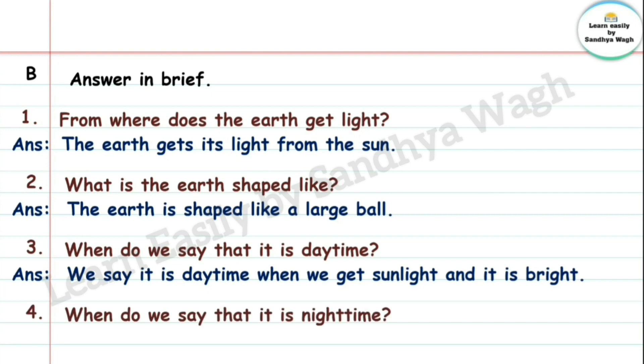4. When do we say that it is nighttime? Night time ahe, ratra zhalia ahe, ase aapan ke vham unto? Answer: We say it is night when we do not get sunlight and it is dark.